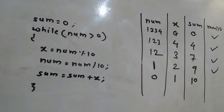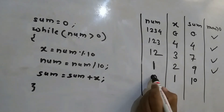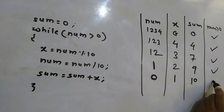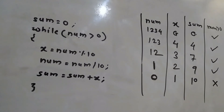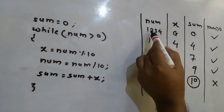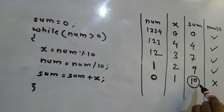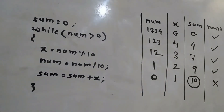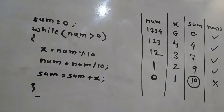In the next iteration, 0 is greater than 0 is false, so the while loop terminates. When execution is over, the sum variable holds 10, which is the sum of digits 1+2+3+4. If you want to print the sum of digits, you can print the sum value after the while loop.